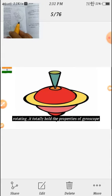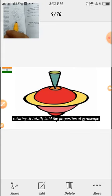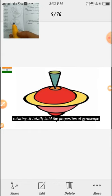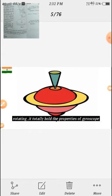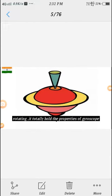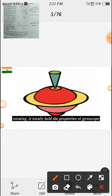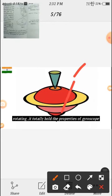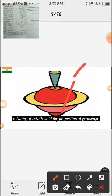The gyroscope displayed on the screen is rotating. When rotating around its axis, the gyroscope totally holds the properties of gyroscope.